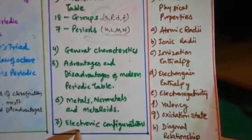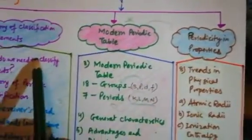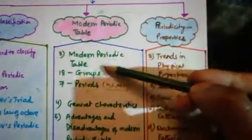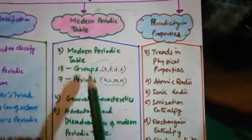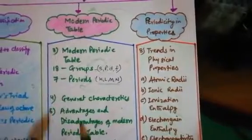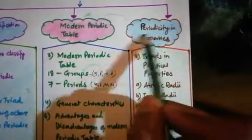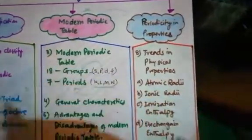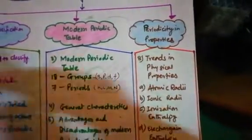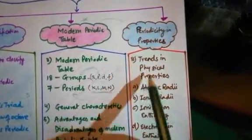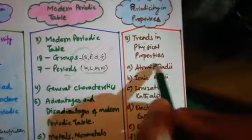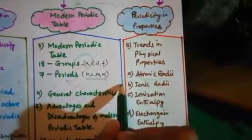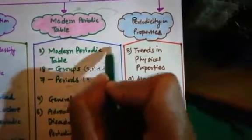Electronic configuration was a drawback area for some students in Unit 2, but we will also discuss it in this unit. The last section is periodicity in properties. Now that you know the history and the modern periodic table, we need to compare each group and each period — that relationship in properties is known as periodicity in properties. 'Periodicity' means recurring in a specific gap or spacing. The physical property trends include atomic radii — the distance from the center to the outermost sphere of an atom.